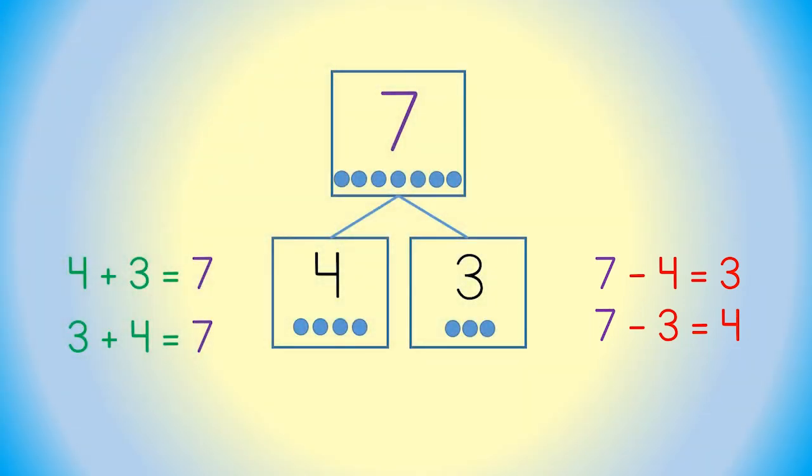Here's a question. Do you think there will always be 4 number sentences for a number bond like this?